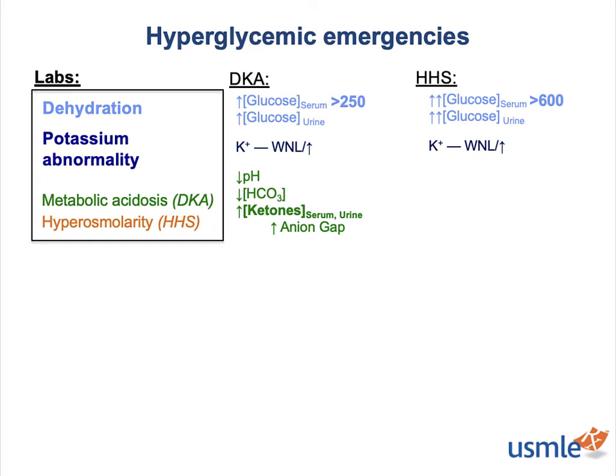HHS is a lot easier. Because it's defined by hyperosmolarity, you just have to measure the serum osmoles. The diagnostic cutoff is a serum osmolarity of greater than 320 milliosmoles.